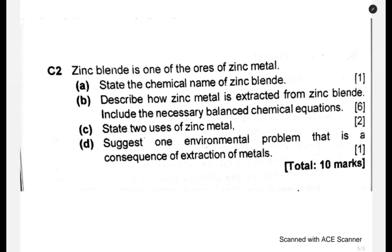I think this is the last question. The question reads: zinc blende is one of the ores of zinc metal. State the chemical name of zinc blende. Like the questions are just repeating — so after answering all these questions, we are settled on zinc. The chemical name is zinc sulfide. That is the chemical name.